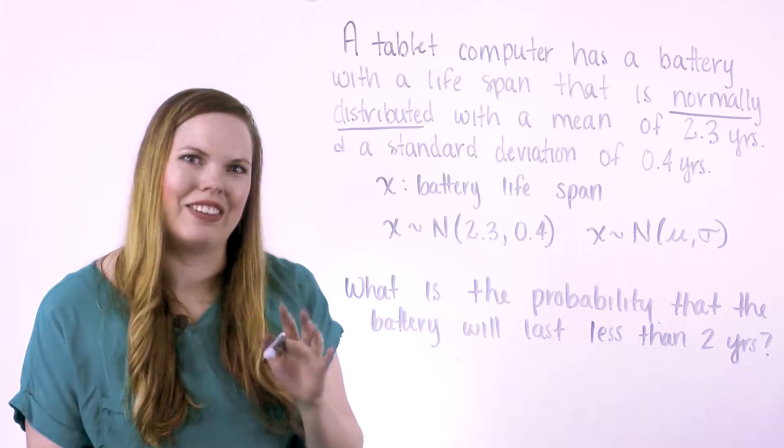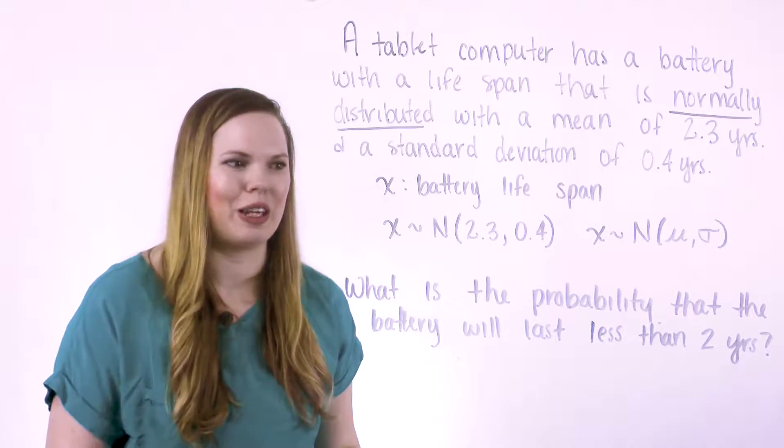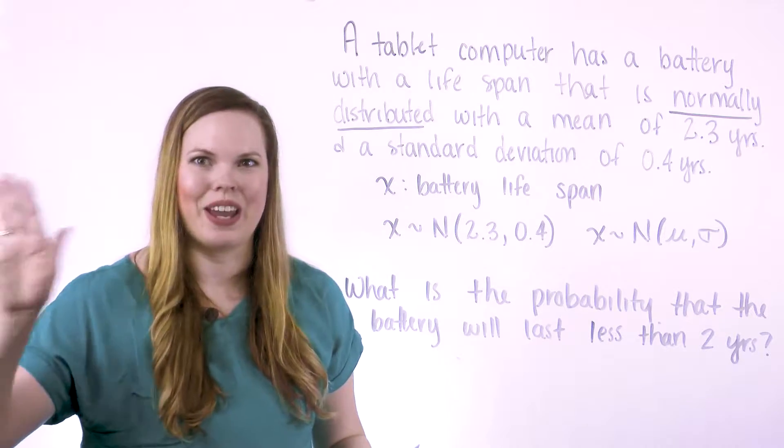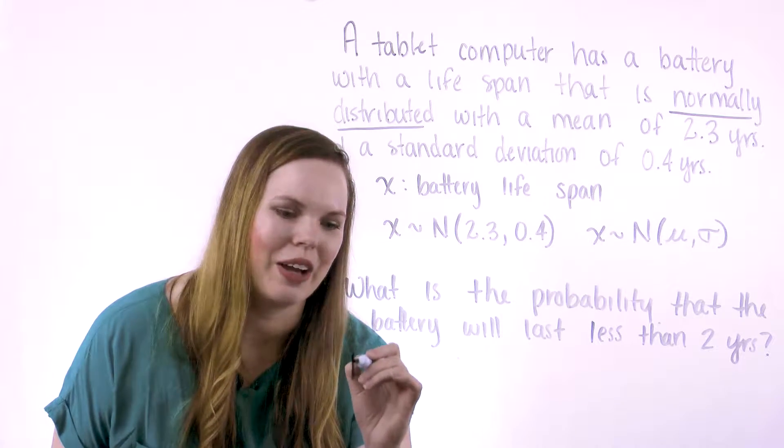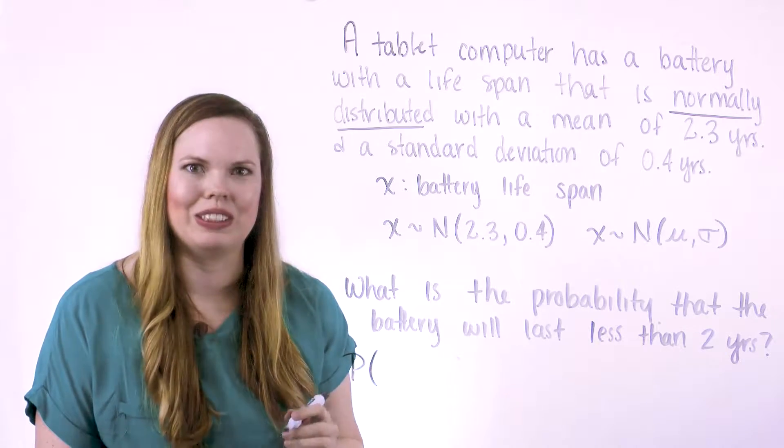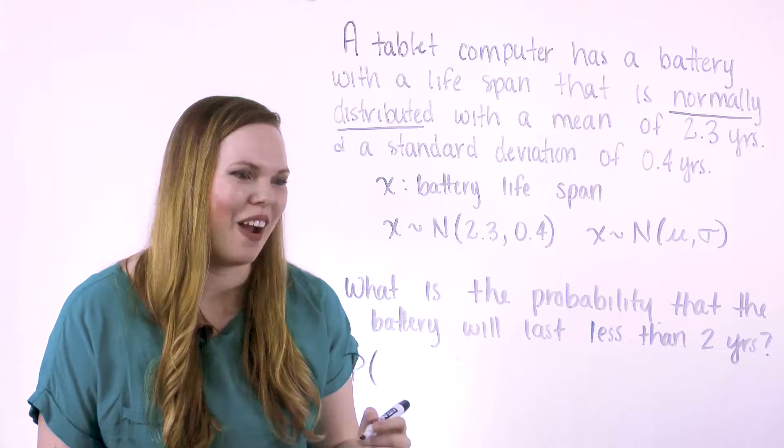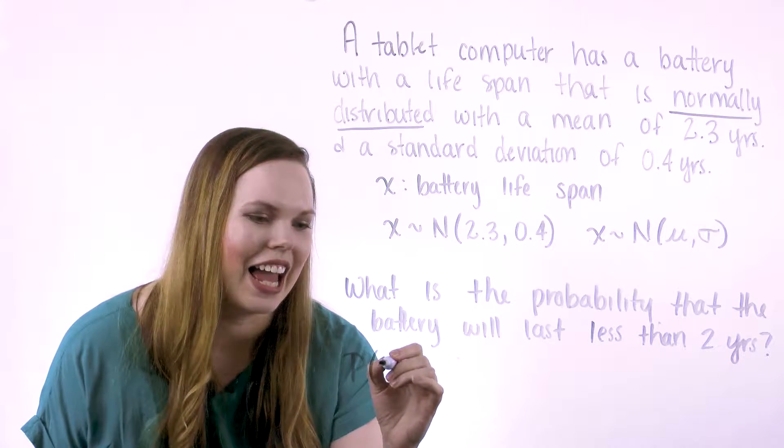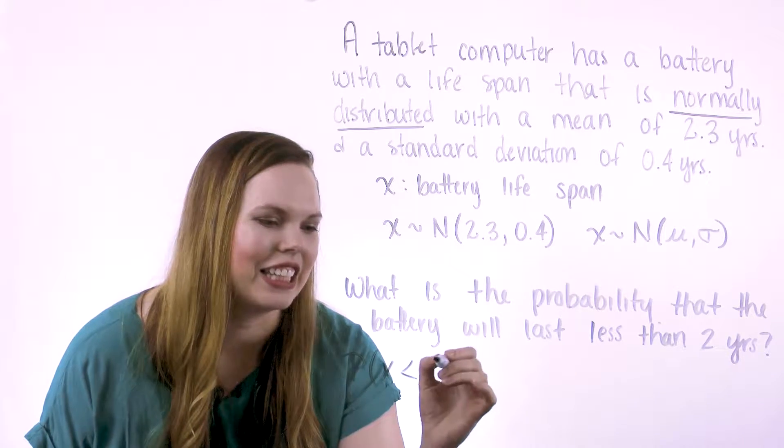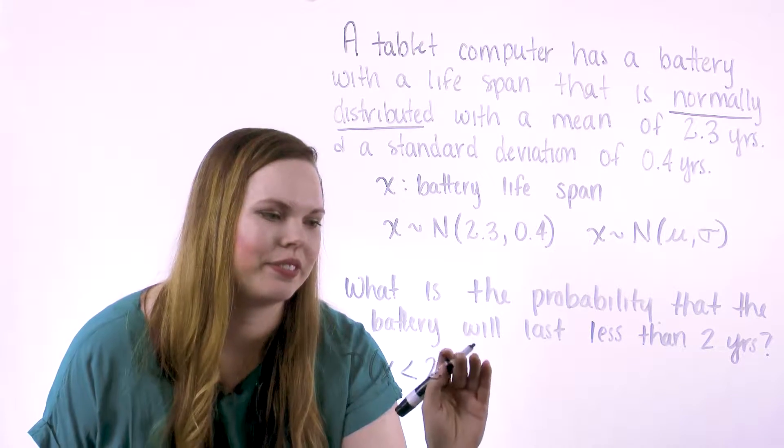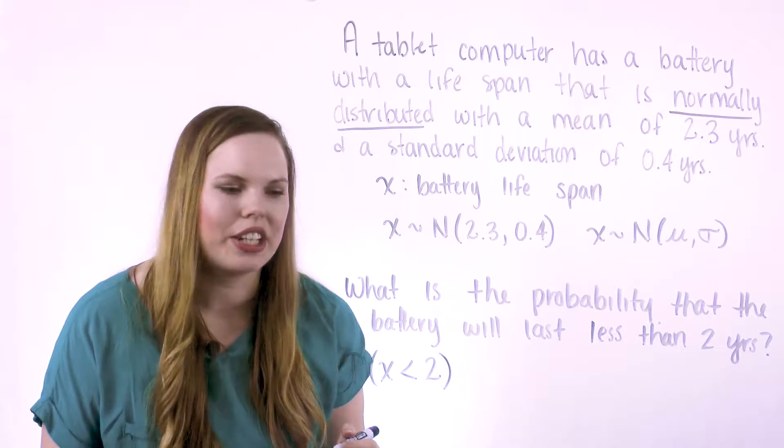But this one has a less than instead of a greater than. So we know this is the area to the left, kind of that less than left. Or if you think about less than is this way, and I'm moving to the left here. So here, reducing those words to some math, finding the probability that x, our random variable here, is less than 2.